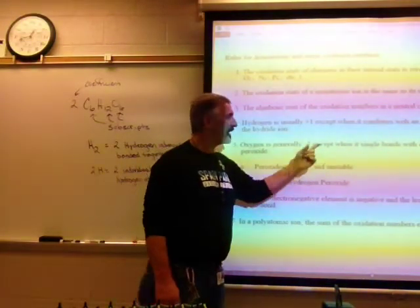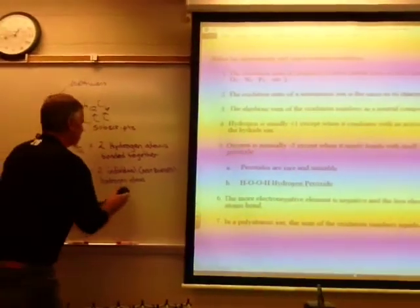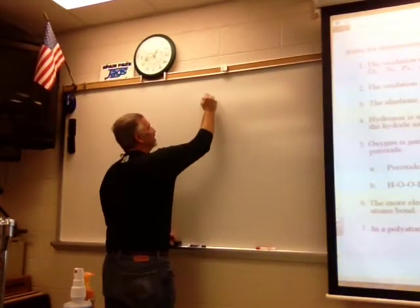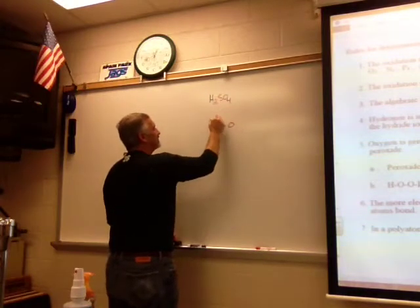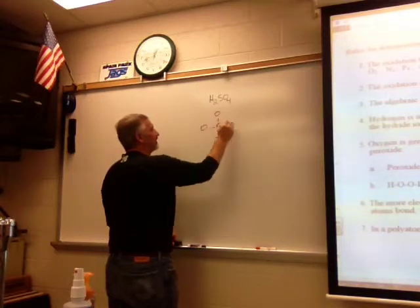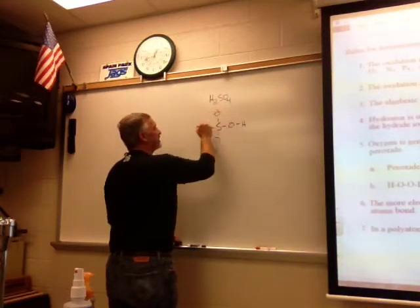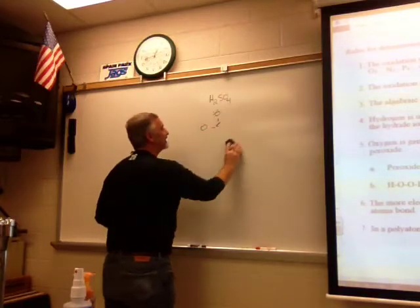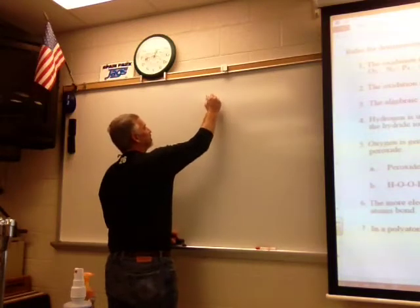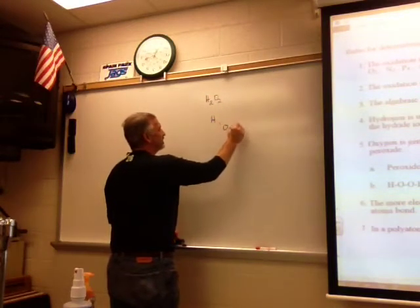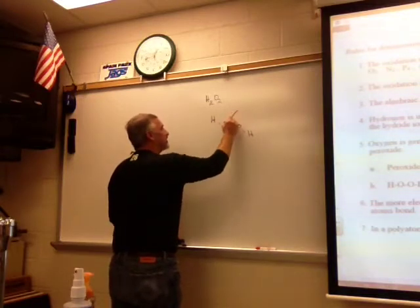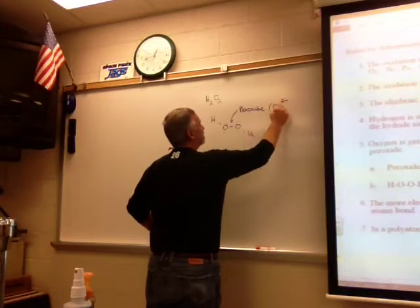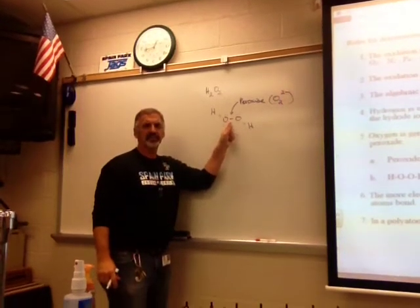Rule five: oxygen is almost always minus two. There's a rare case called a peroxide, when it bonds with itself — like hydrogen peroxide, H2O2. This is what makes it a peroxide. It's an O2 with a two-minus charge. When oxygen is single-bonded to itself, that's when you get a peroxide.